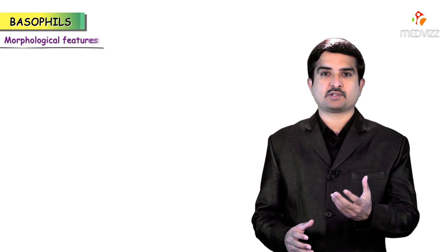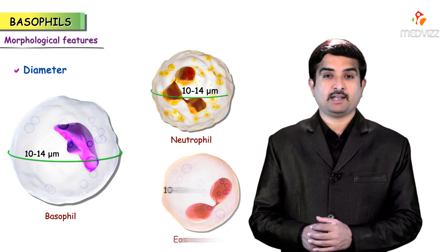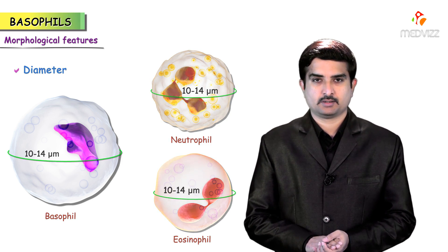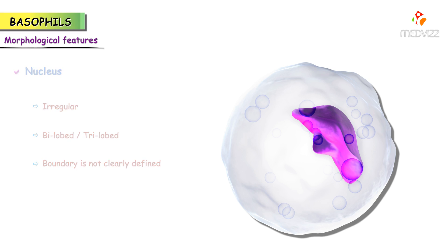Basophils - let's talk about its morphological features. The diameter of the basophil is similar to that of the neutrophil and eosinophil, that is 10 to 14 micrometers. The nucleus of the basophil is irregular and may be bilobed or trilobed, and its boundary is not clearly defined because of overcrowding and numerous granules.